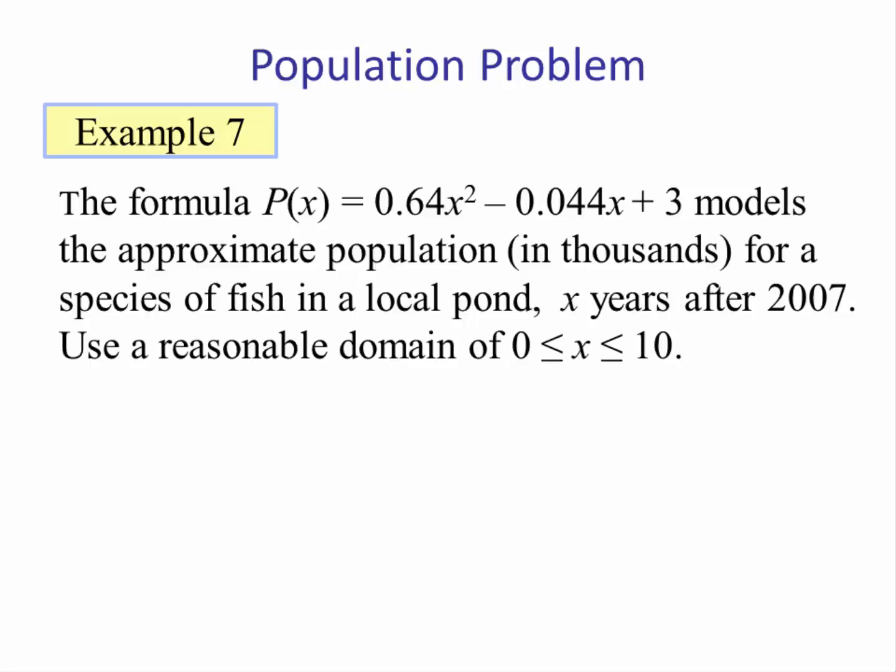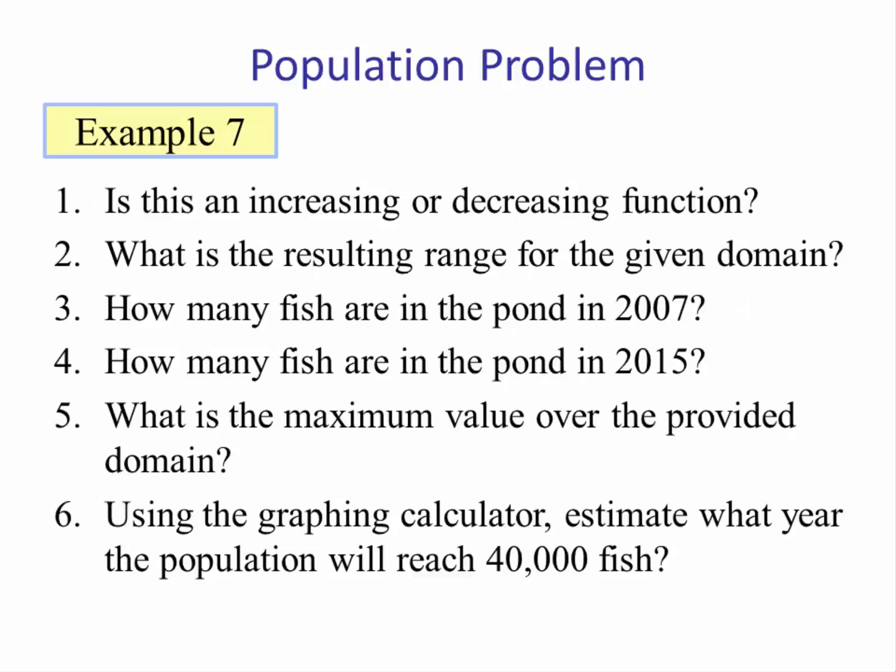Number one: is this an increasing or decreasing function? Number two: what is the resulting range for the given domain? Number three: how many fish are in the pond in 2007? Number four: how many fish are in the pond in 2015? Number five: what is the maximum value over the provided domain? Number six: using a graphing calculator, estimate what year the population will reach 40,000 fish.